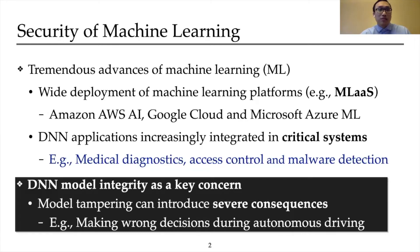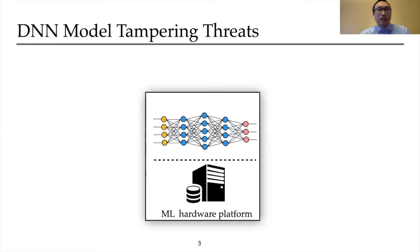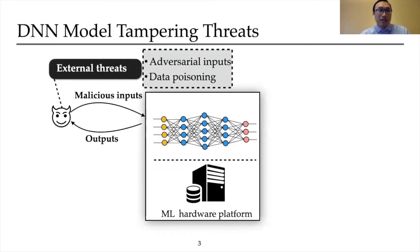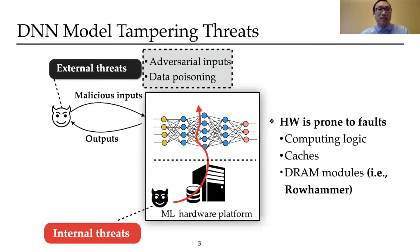Among several ML security objectives, model integrity is a key concern. Tampered DNN models can lead to severe consequences in the inference stage. For example, imagine what would happen if an intelligent system is making wrong decisions during autonomous driving. Currently, considerable attention has been focused on external threats that exploit inputs and outputs where a malicious user is sitting outside the ML system. However, internal threats that leverage hardware vulnerabilities in systems is less explored.